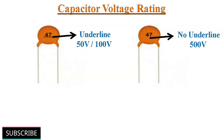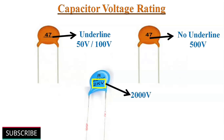Brown colored ceramic capacitors usually have an underline below the marking, which means the voltage rating is 50 volts or 100 volts. If there is no underline, then the voltage rating is 500 volts. Some capacitors have 2KV or 1KV printed on their surface — 2KV indicates 2000 volts and 1KV indicates 1000 volts.